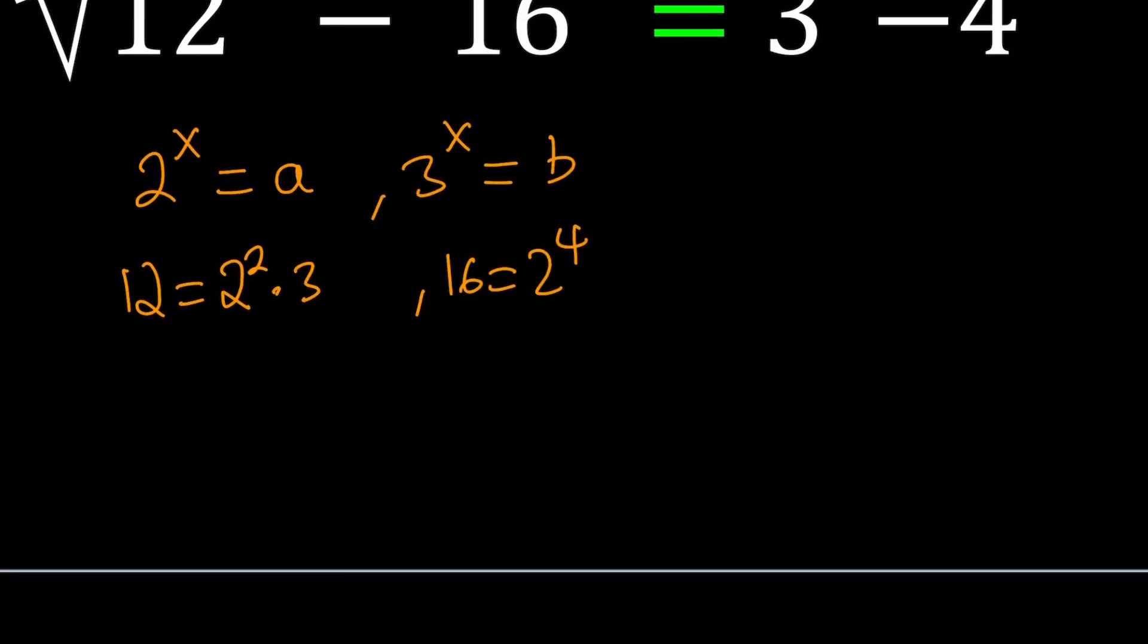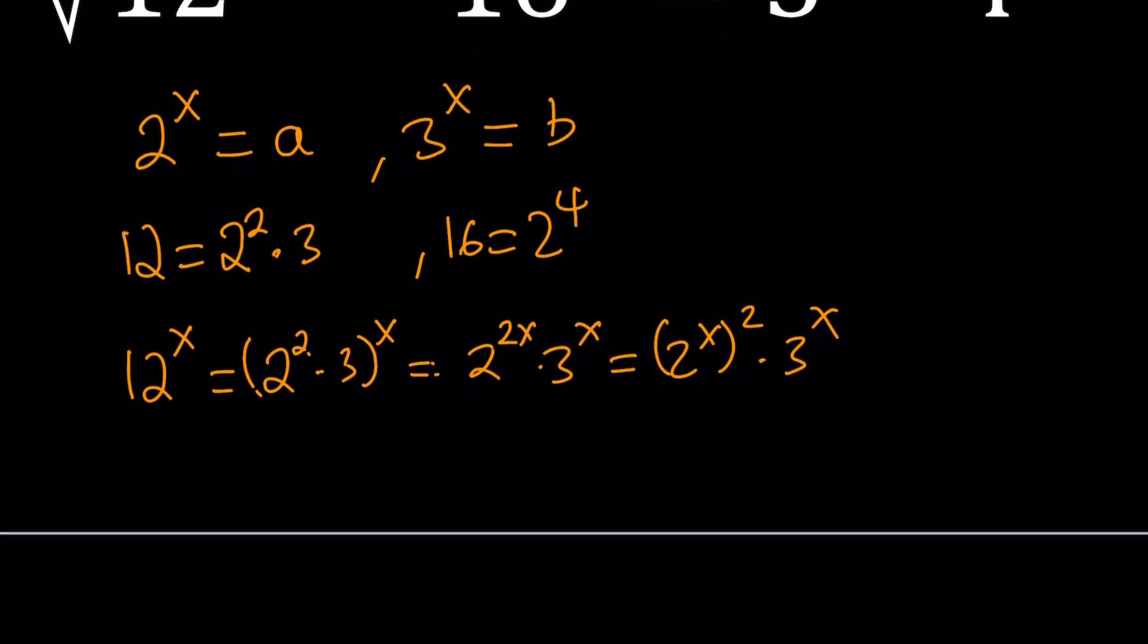Now what is 12 to the power x going to be? You can basically raise both sides to the power x, and then this will be distributed. And then 2 to the power 2x can be written as 2 to the power x squared and multiply by 3 to the power x. That basically gives us a squared b. So 12 to the power x basically can be written as a squared b. And now we're going to look at each one of these.